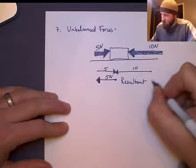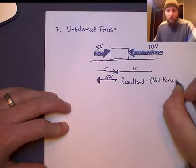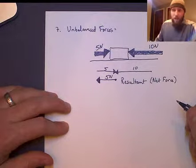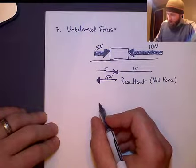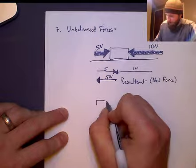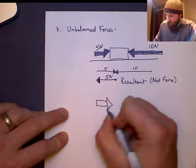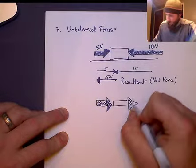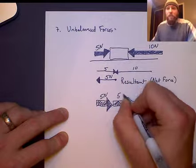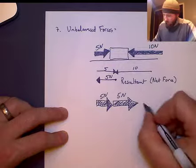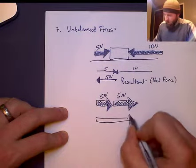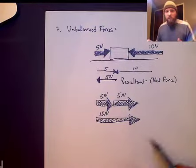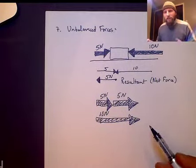This is also called net force, which we'll see again in our vocabulary. A resultant is a net force, the sum of two forces. Now, if unbalanced forces are acting in the same direction, say five newtons and five newtons, these would be added together for a resultant force of ten newtons.